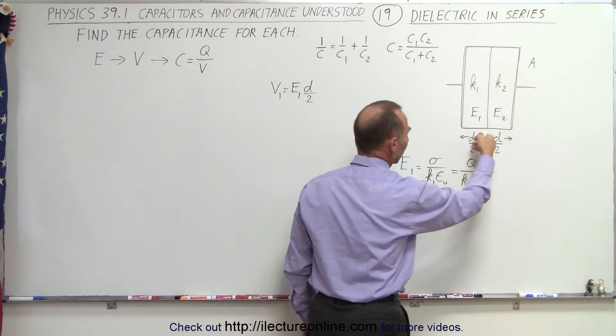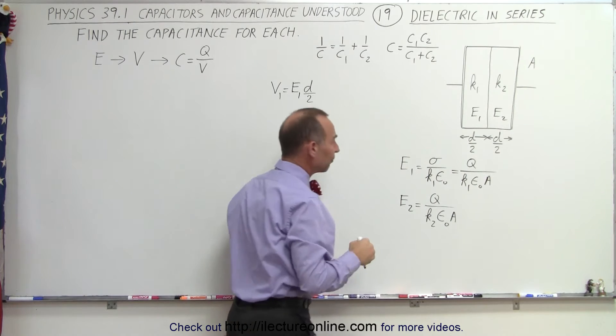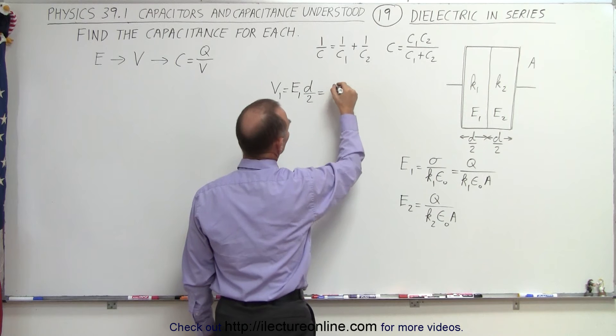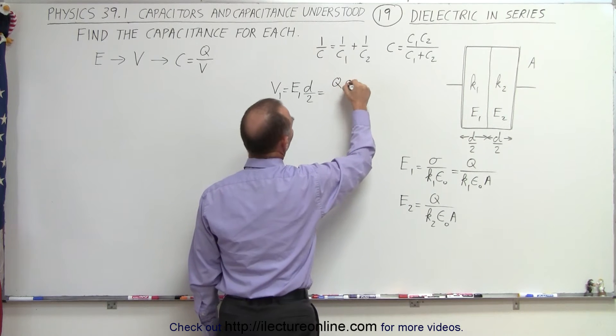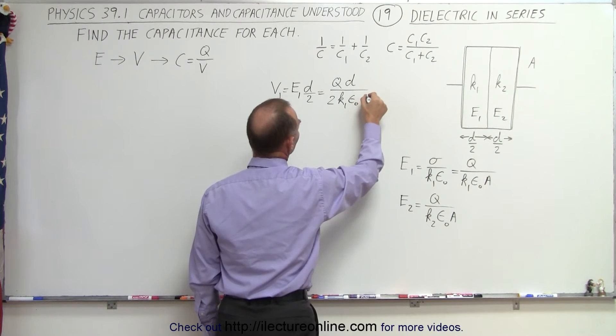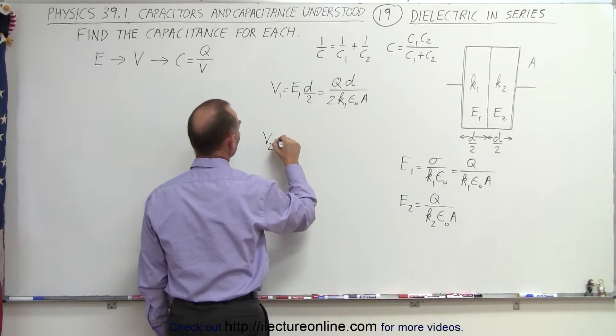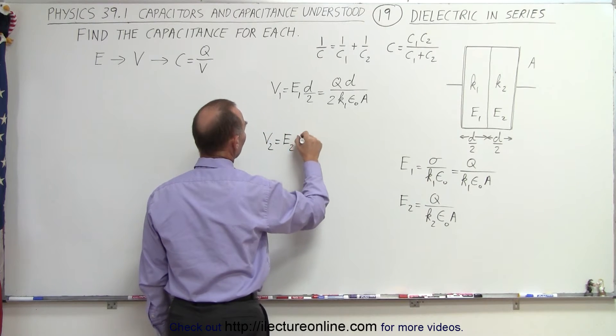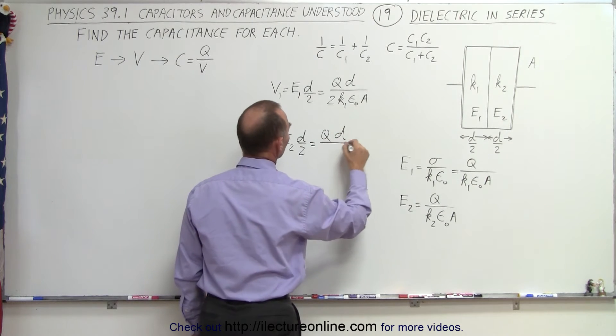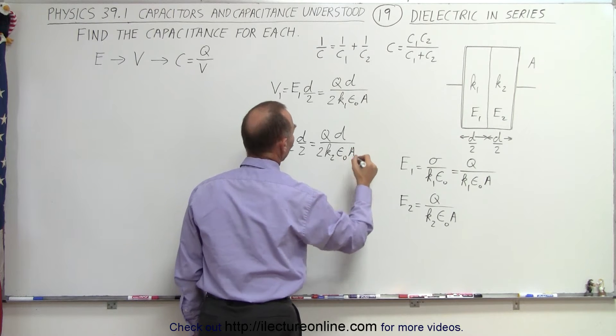Now, if you had a different ratio, like one third and two thirds, you would use one third d and two thirds d for the two sections. Now, plug in what E1 is equal to. So this becomes equal to q times d divided by 2 k1 epsilon naught times A. Same for V2, so V2 would be equal to E2 times d over 2. So in this case, this is q d over 2 k2 epsilon naught times A.